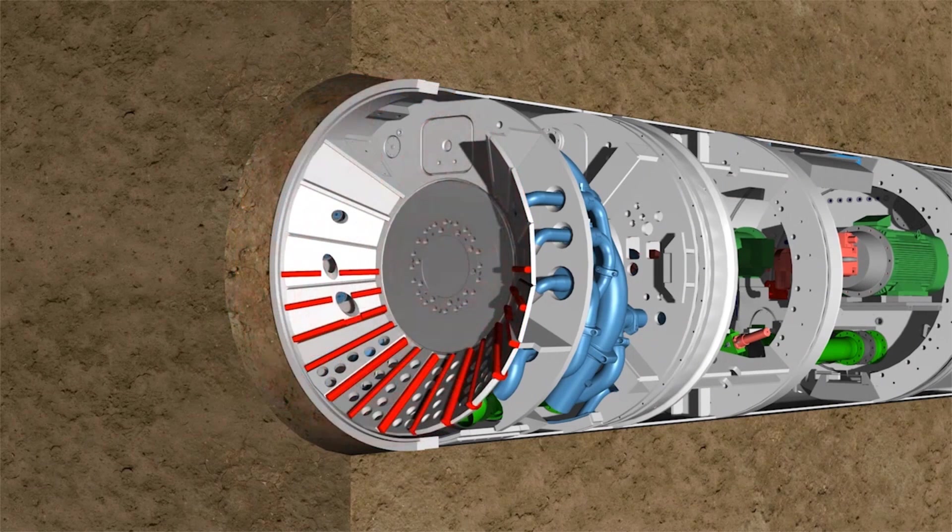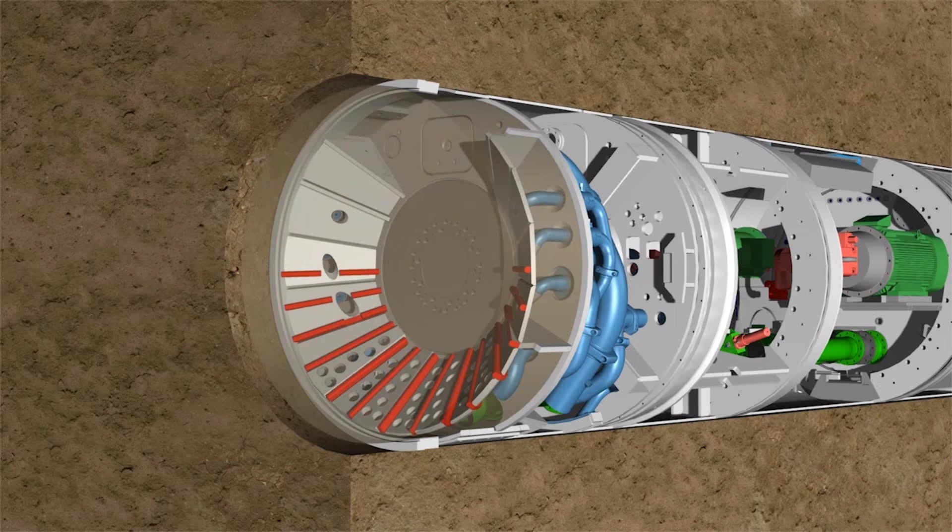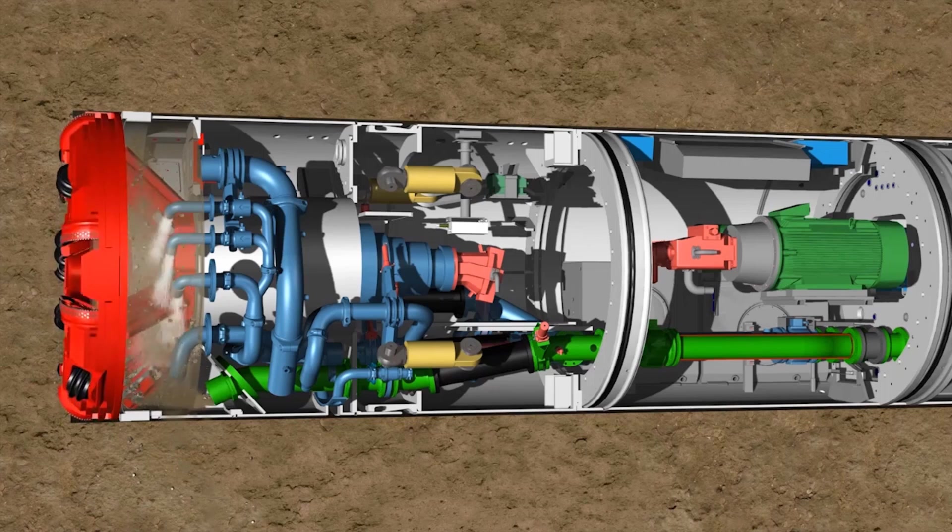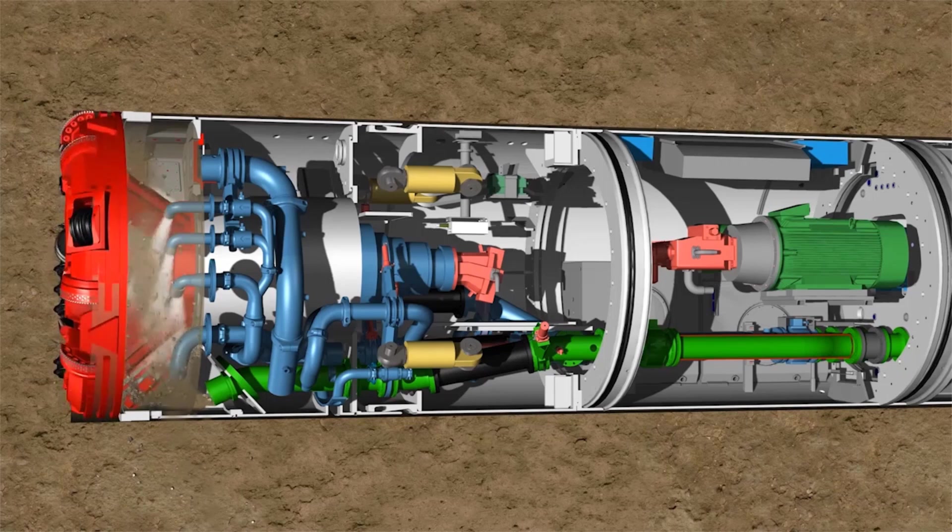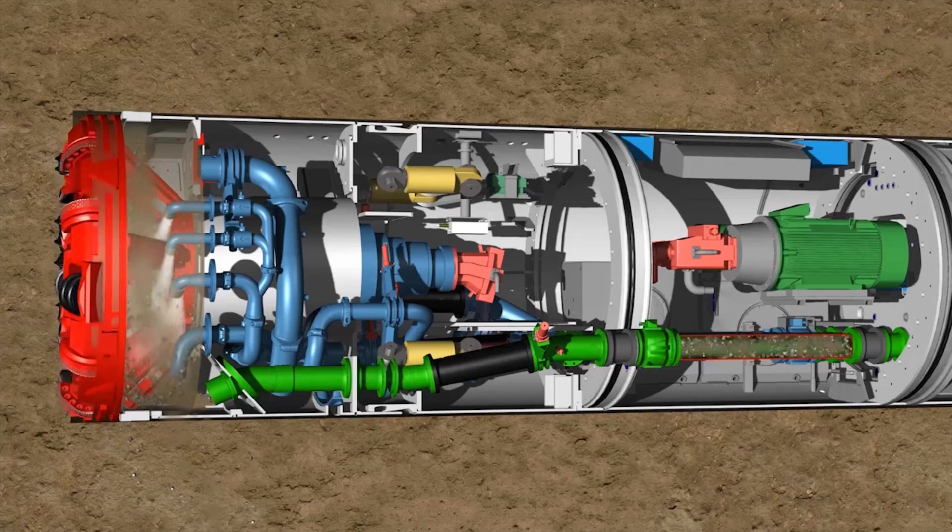Behind the cutting wheel is the crusher chamber. During operation, the whole of the chamber is flooded with support fluid. The cladded spokes of the cutting wheel act as a grinder, working on the principle of a coffee grinder. The larger pieces of soil are crushed so they fit through the openings of the crusher cone and can be carried away.